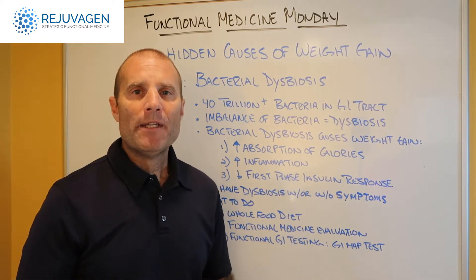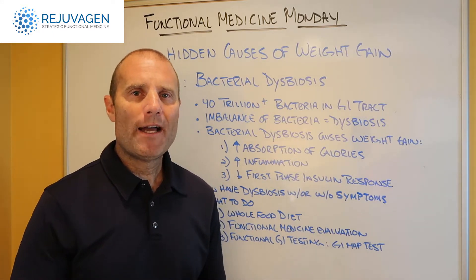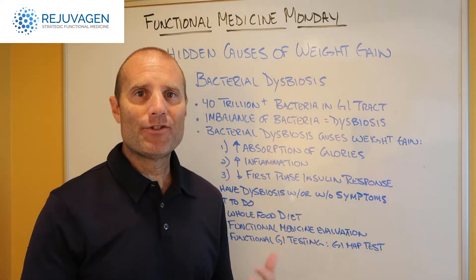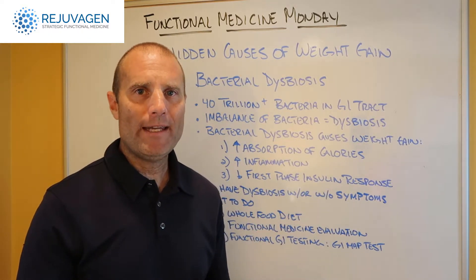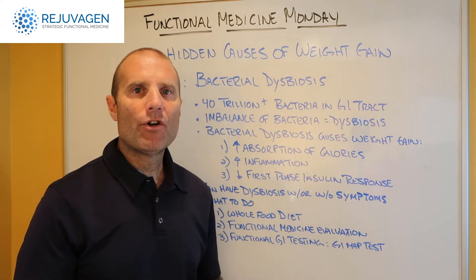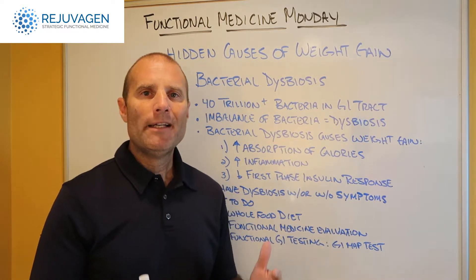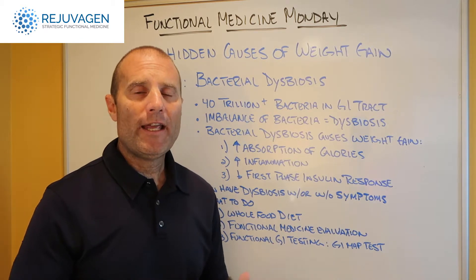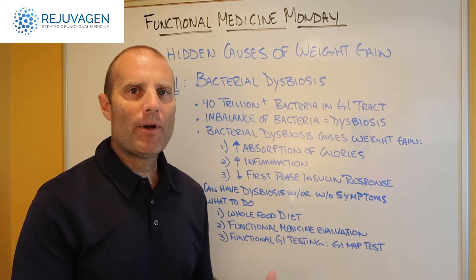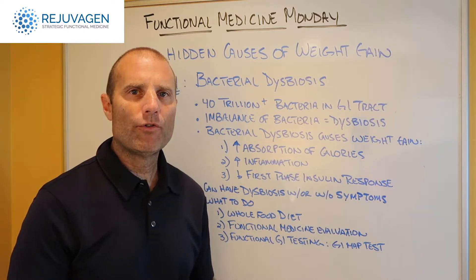So what can you do? If you've seen your primary care physician and you're gaining weight and they don't understand why — and you've started eating less and exercising harder and you're still gaining weight — you might have bacterial dysbiosis. Step one is to start eating a whole food diet. Reduce the processed foods, as it's the processed foods that typically contribute to bacterial overgrowth.